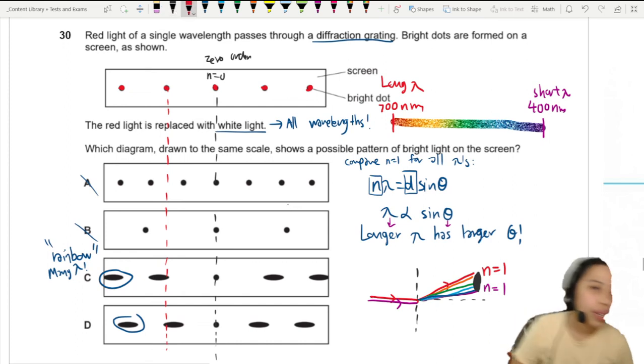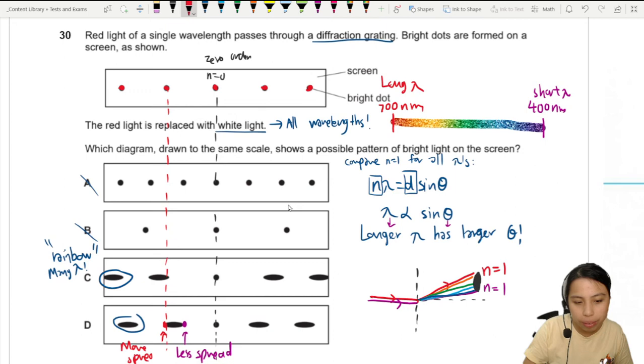Red should be on the outermost. As you go closer to the middle, that should be purple here, so less spread out. Red color should be at the outside, which is more spread out. So best choice here we're gonna go with is D, although C and D is very close.